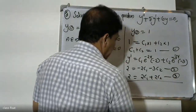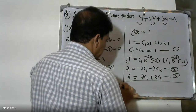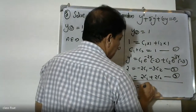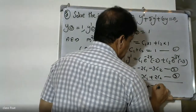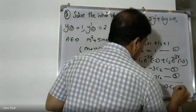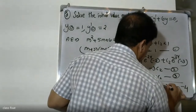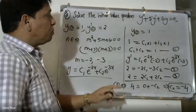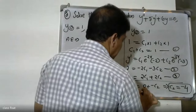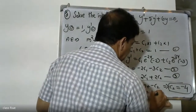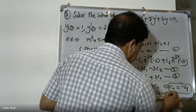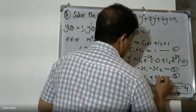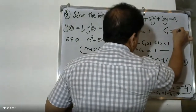Adding the two equations, we get c2 is equal to minus four. Substituting back, c1 is equal to one minus c2, that is one minus minus four, which equals five. So c1 equals five and c2 equals minus four.